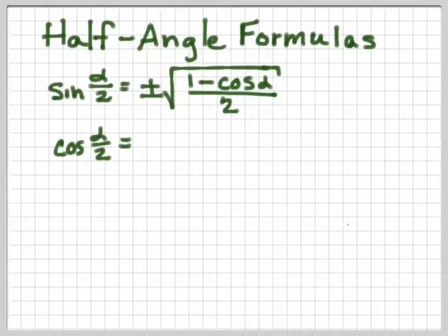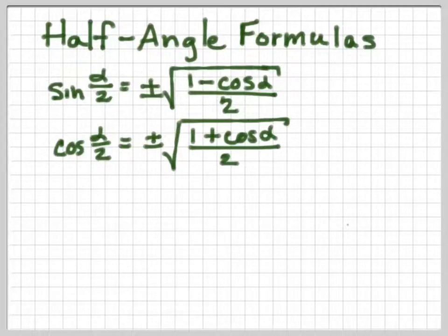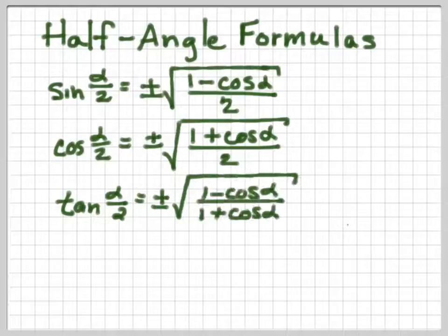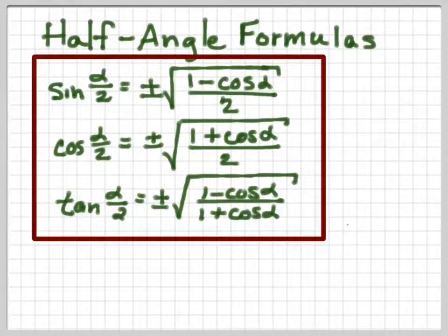The cosine of α/2 is plus or minus the square root of (1 + cos α)/2. And the tangent of α/2 is plus or minus the square root of (1 - cos α)/(1 + cos α). Those are what you need to memorize.